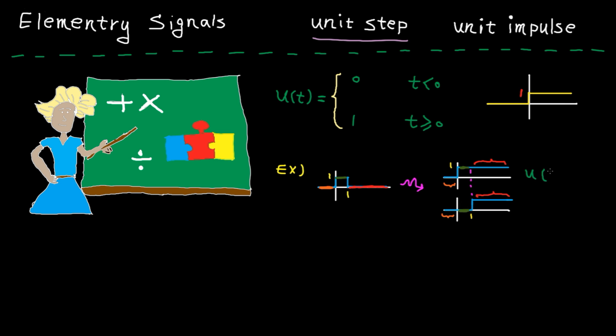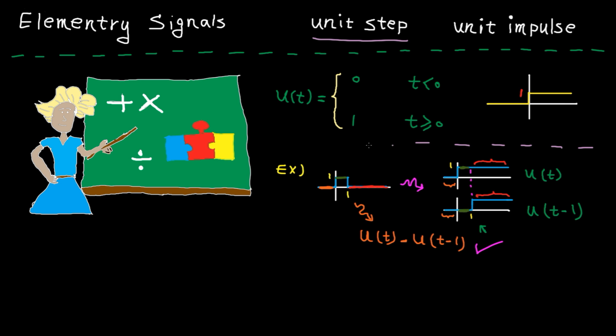The top signal is u of t and the bottom one is u of t minus 1. So this window can be expressed as u of t minus u of t minus 1.